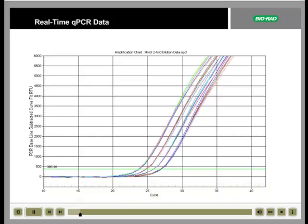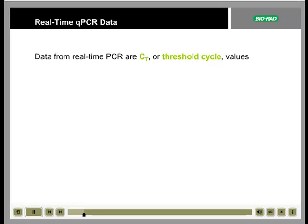During the early cycles, fluorescence remains at background levels. Eventually, however, enough amplified product accumulates to generate a detectable signal. The cycle number at which this occurs is the threshold cycle, or CT. In this plot, the threshold fluorescence is indicated by the green line. In real-time quantitative PCR, the data that are generated are the threshold cycle, or CT, values.